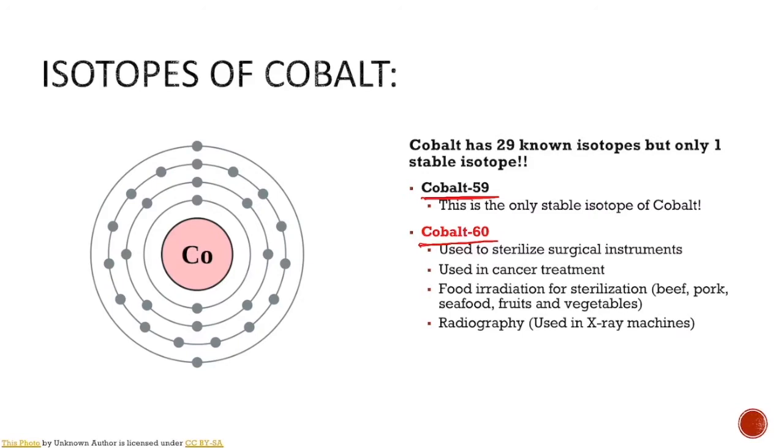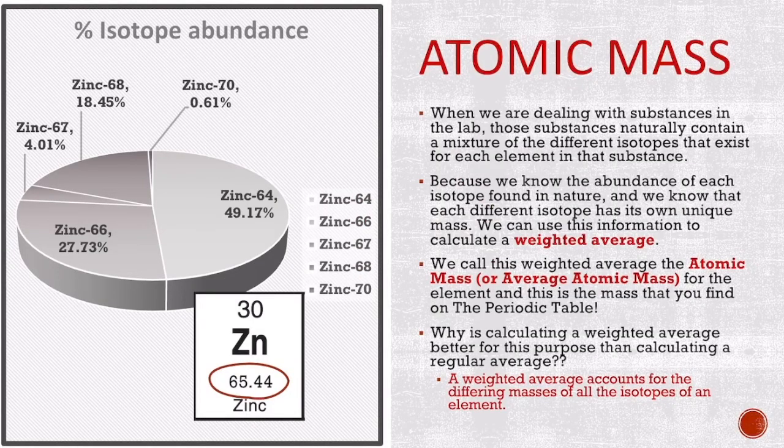It can be used in cancer treatment. It's also used to irradiate food products. Sometimes you will find irradiated produce or meats at the grocery store. This means those items have been exposed to radioactive materials in order to kill harmful bacteria and help preserve those foods longer. Cobalt is also used in radiography, in x-ray machines and stuff like that.